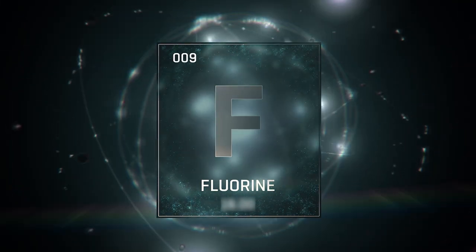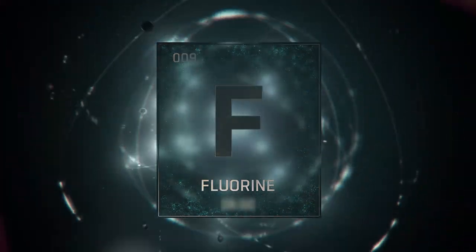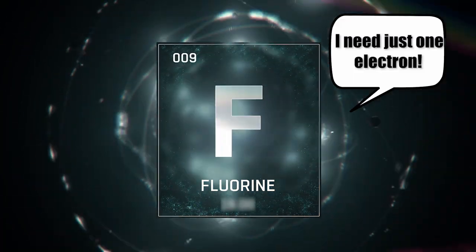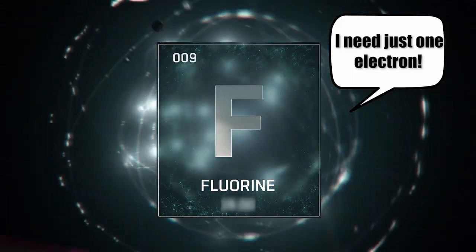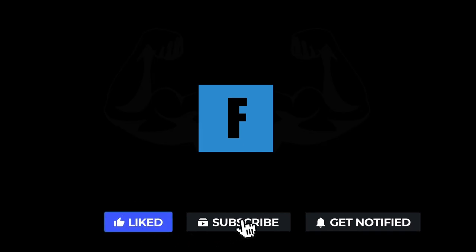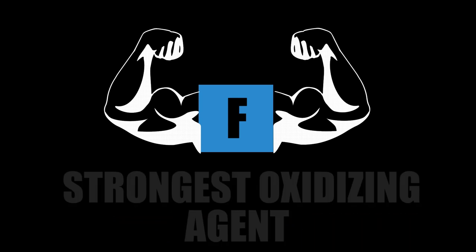Fluorine is the most reactive non-metal, with an atomic number of nine and seven electrons jammed in its valence shell. This means it must gain only a single electron to complete its final shell and achieve stability. Fluorine is identified as the most electronegative element in the periodic table, making it the strongest oxidizing agent.